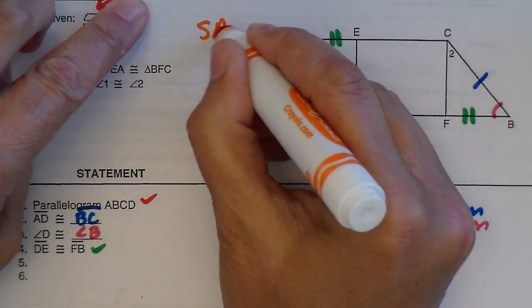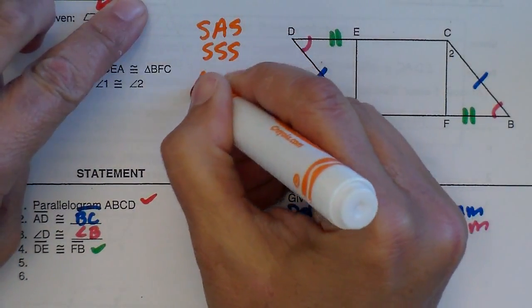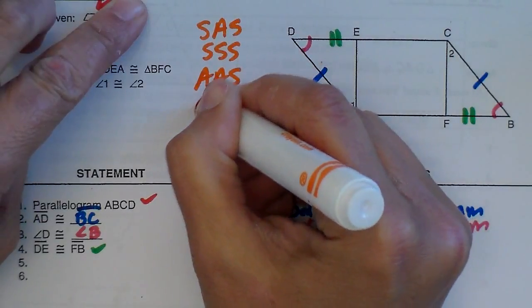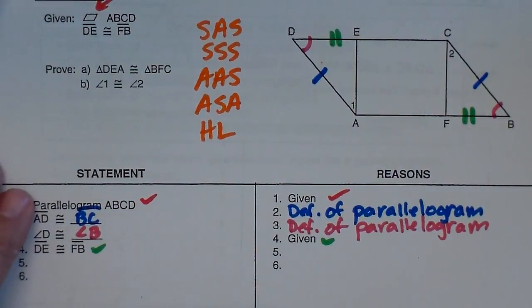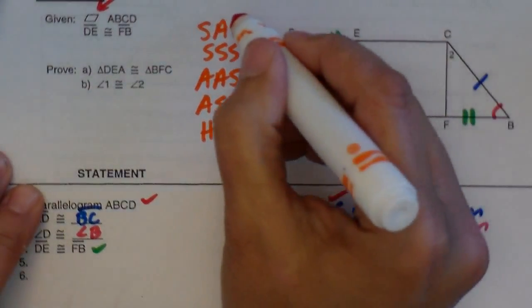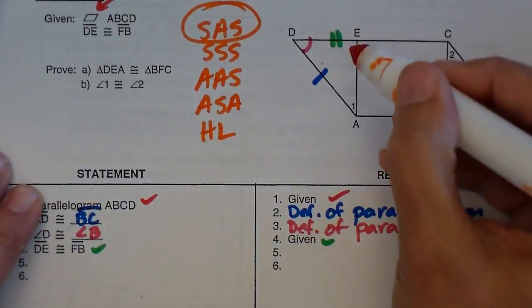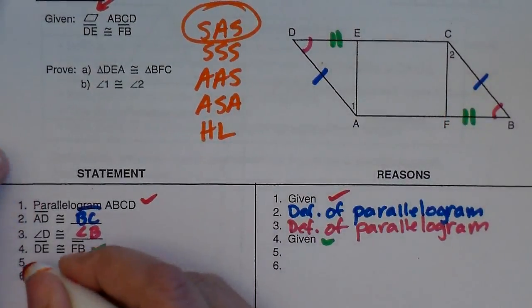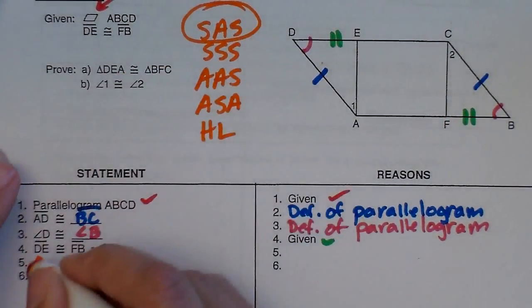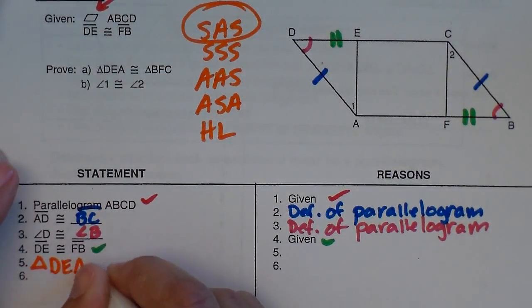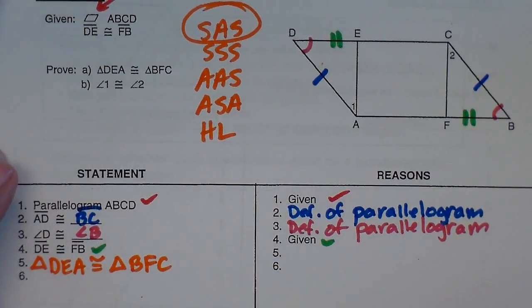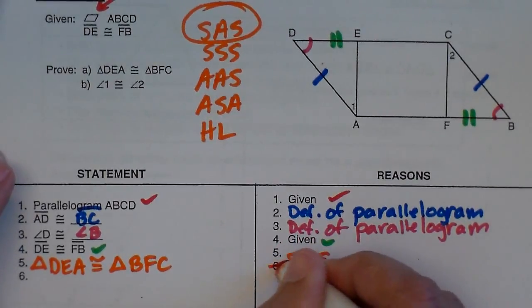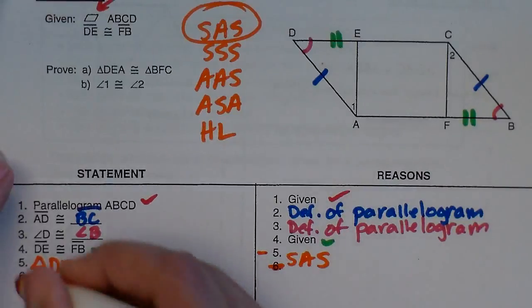Remember, there's five different ways we can establish congruent triangles. So you have to decide which one, and in this case, it's side, angle, side, because I have two triangles here. So I can say triangle DEA is congruent to triangle BFC by side, angle, side.